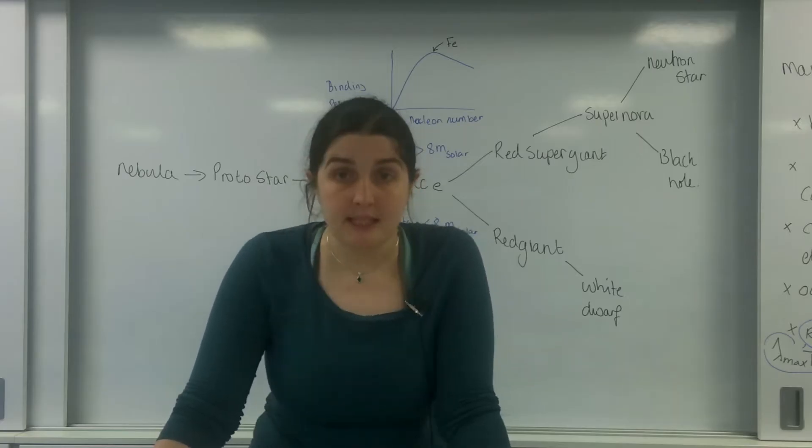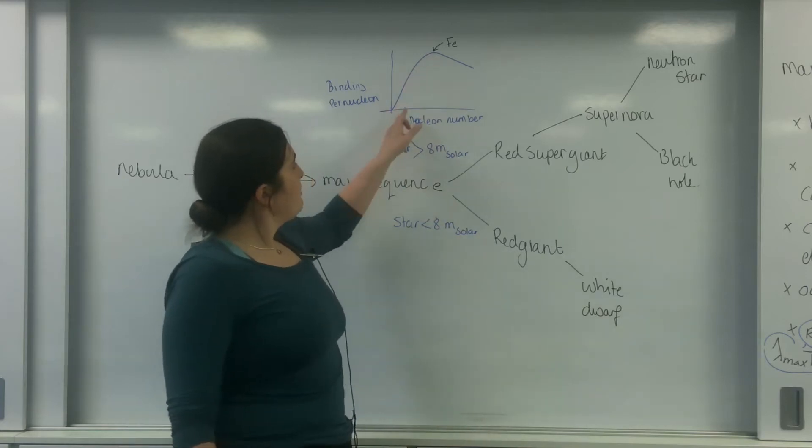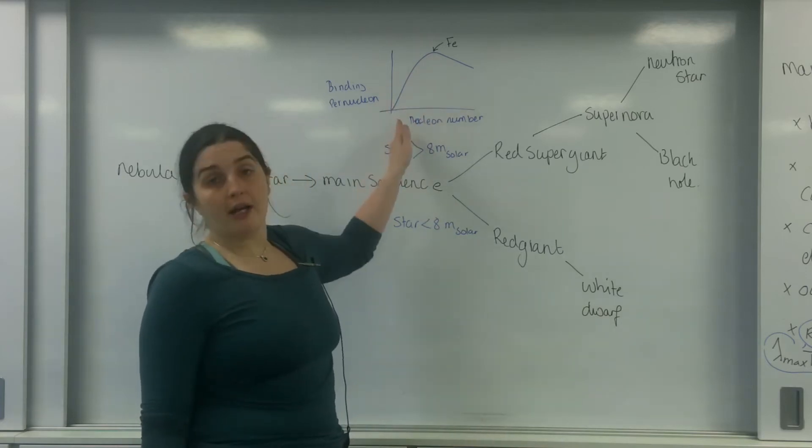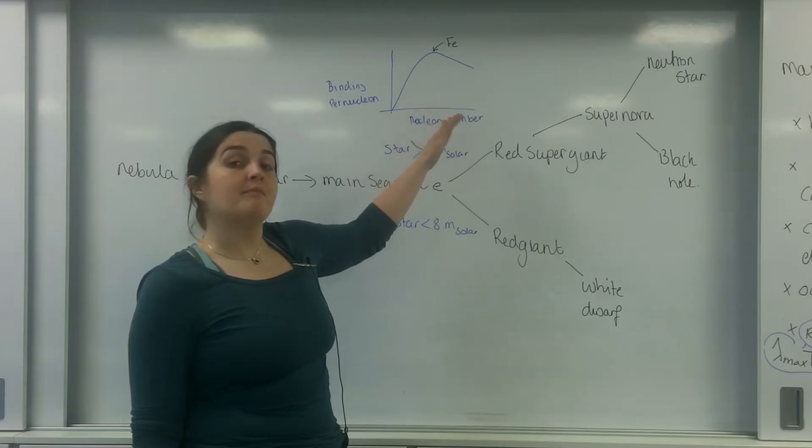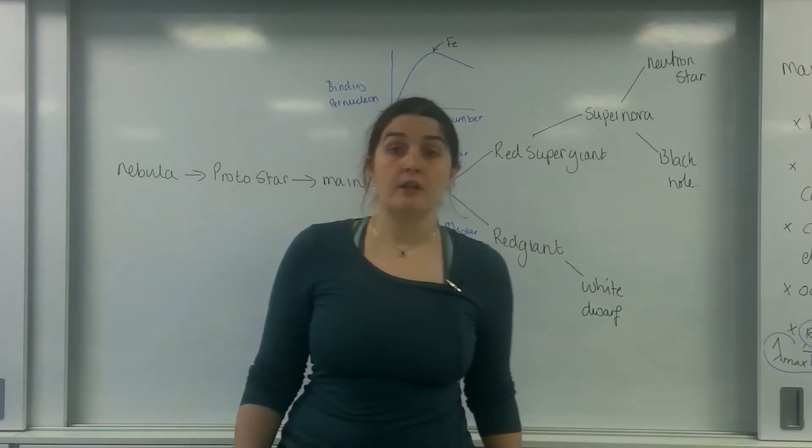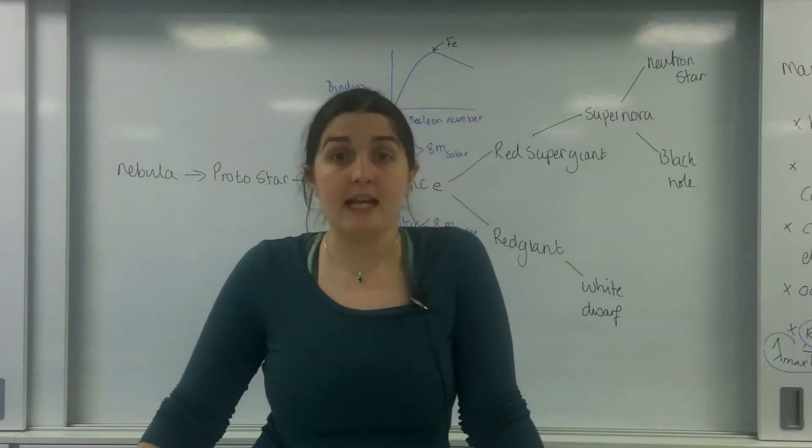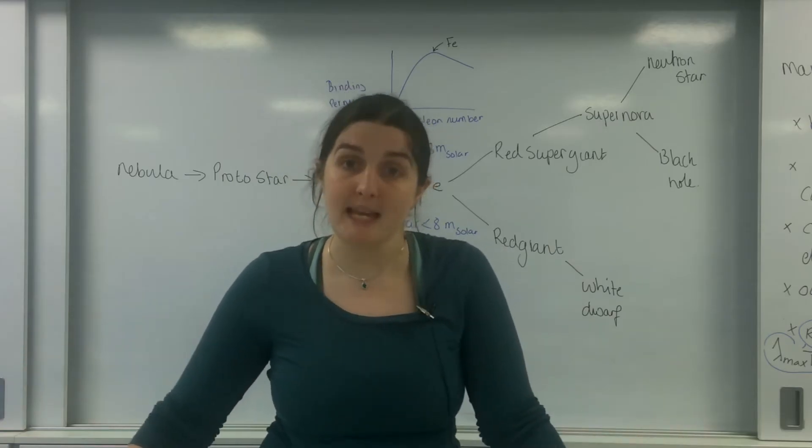Which means that to increase the binding energy per nucleon before iron, I must get bigger. So there's nuclear fusion. Elements like hydrogen and helium, when they are fusing together, are actually becoming more stable.